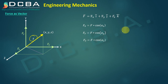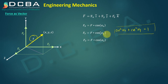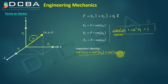Similar to the 2D case where we had the identity cos²(αX) + cos²(αY) = 1, in the 3D case we have an important identity: cos²(αX) + cos²(αY) + cos²(αZ) = 1.